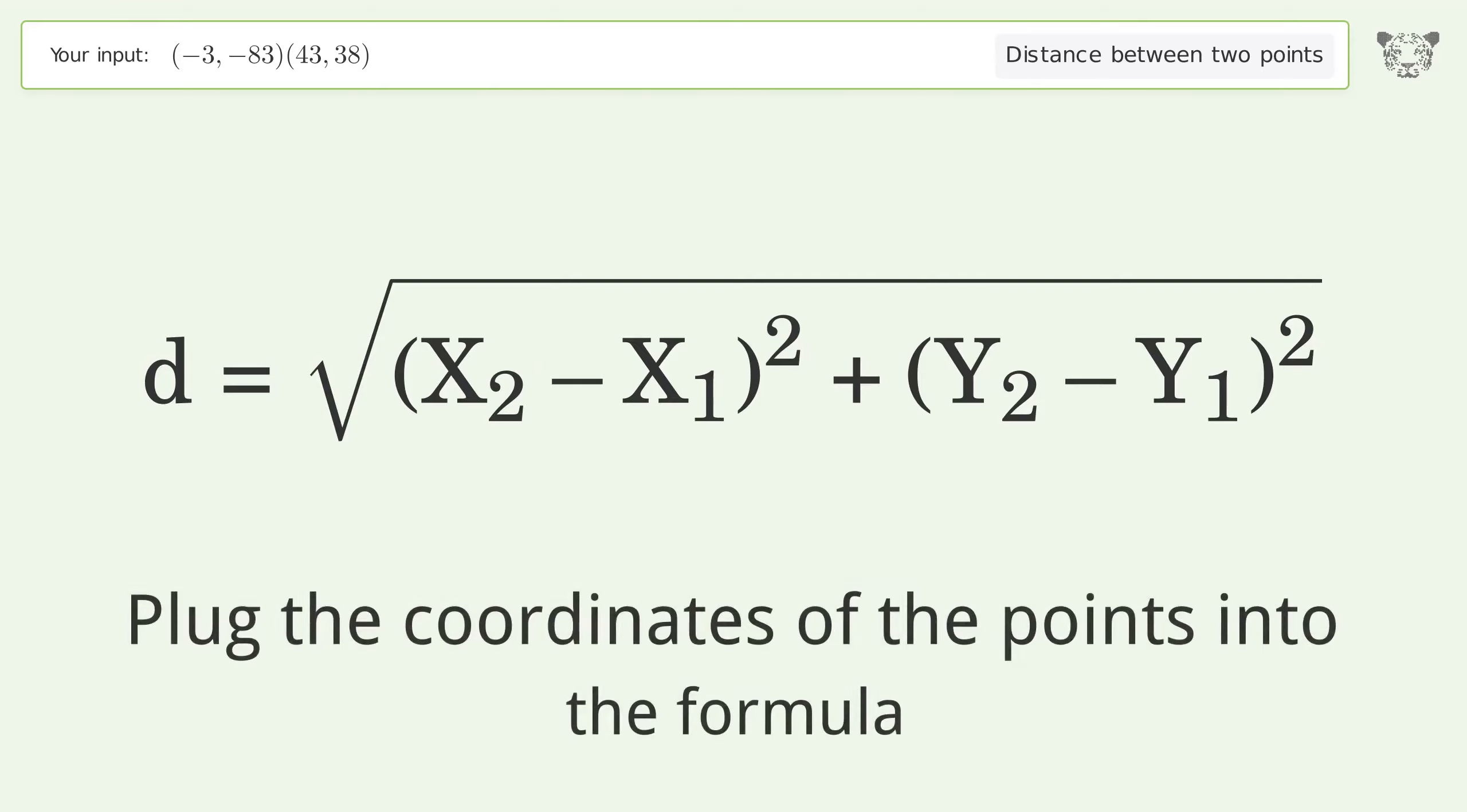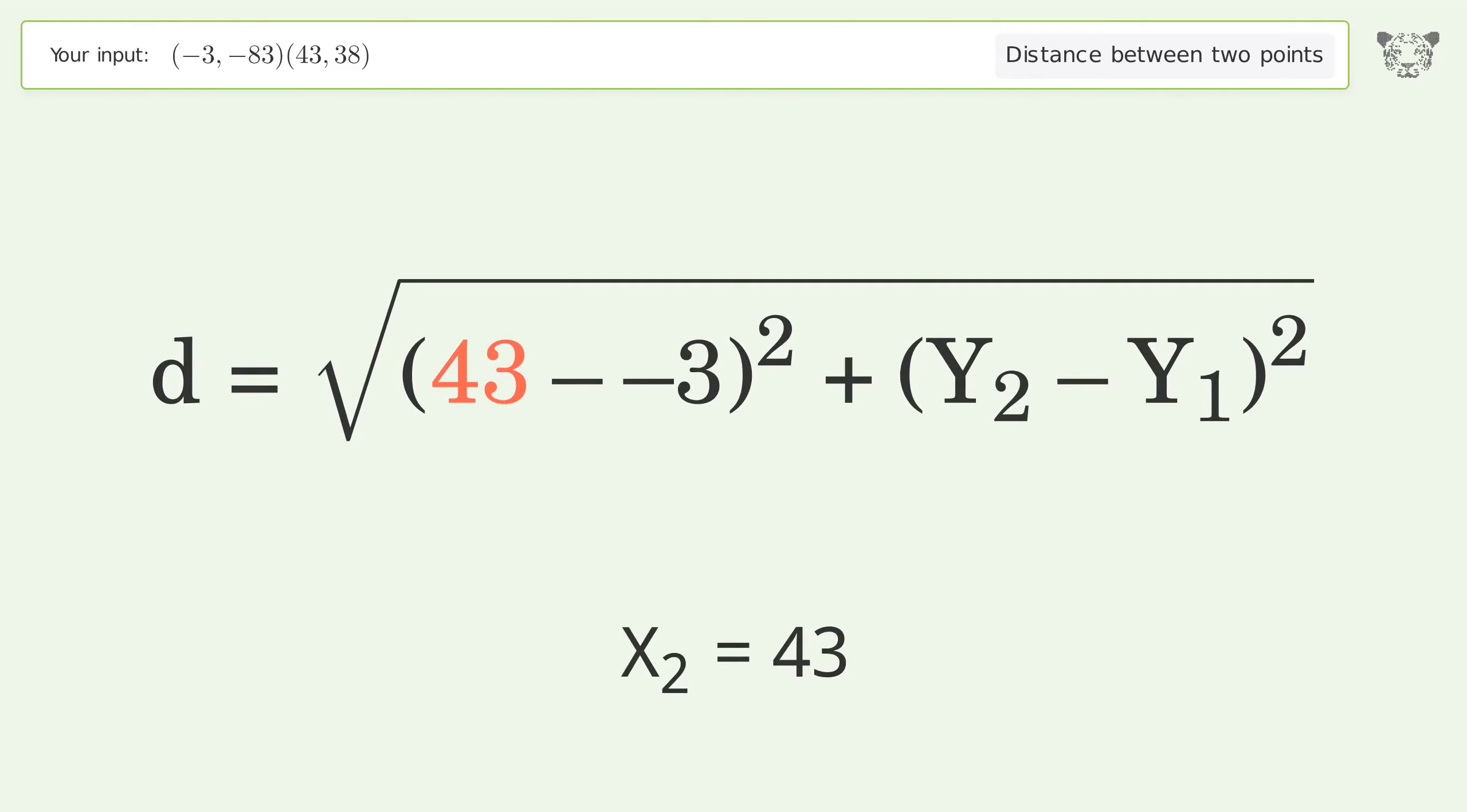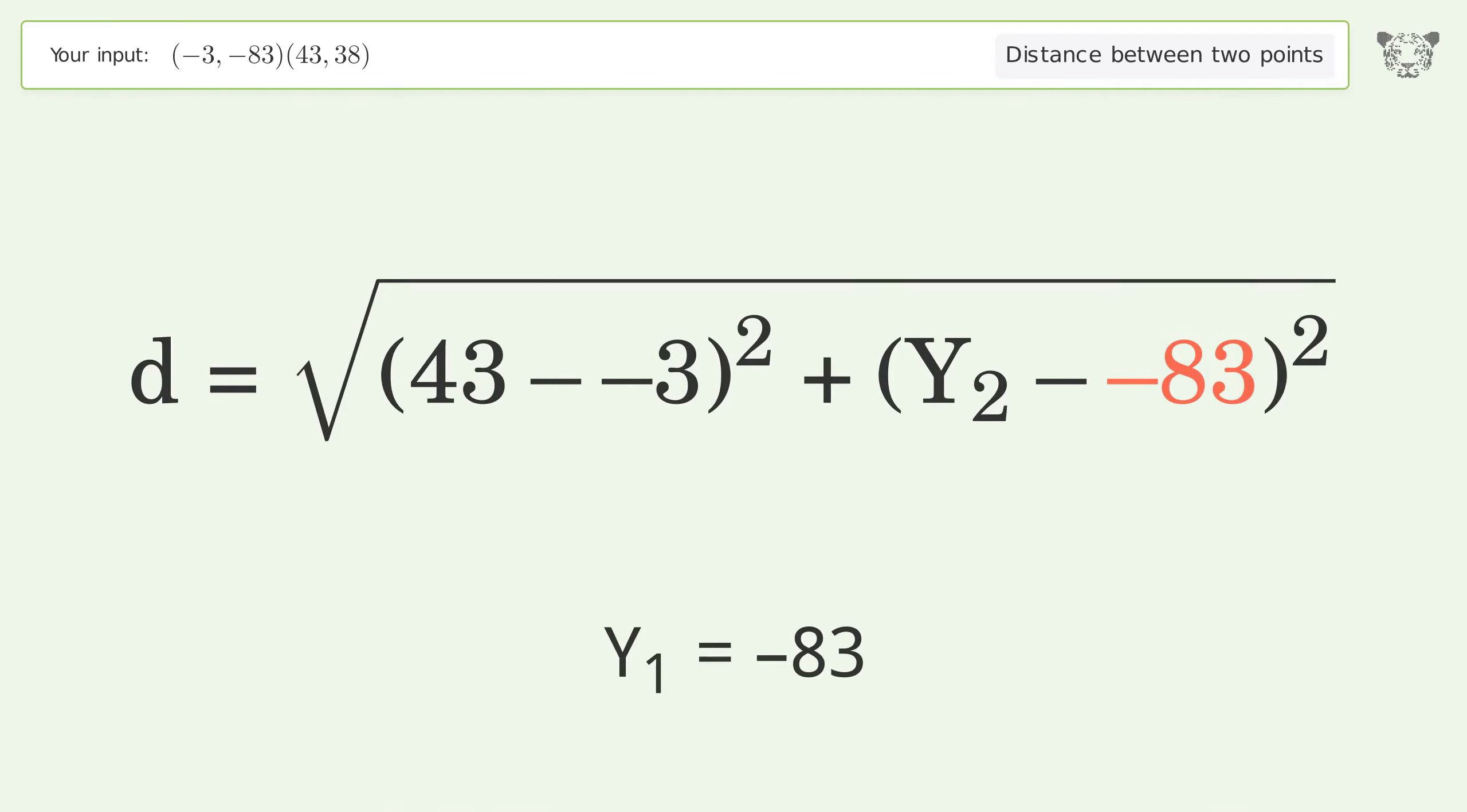Plug the coordinates of the points into the formula. x1 equals negative 3, x2 equals 43, y1 equals negative 83, y2 equals 38.